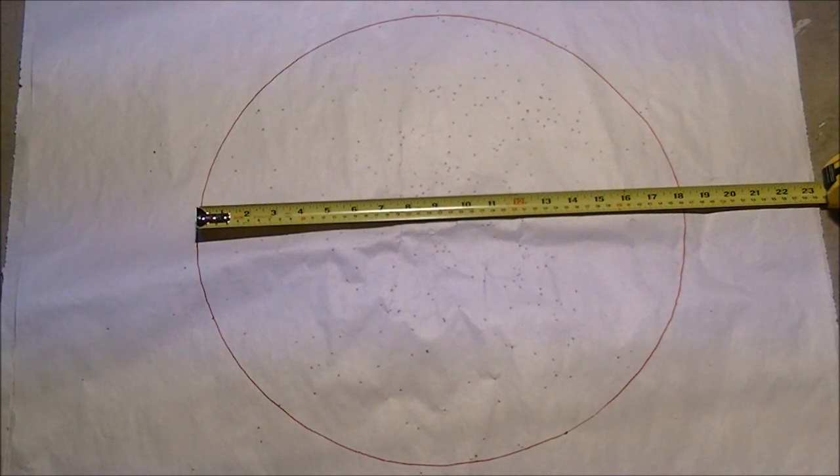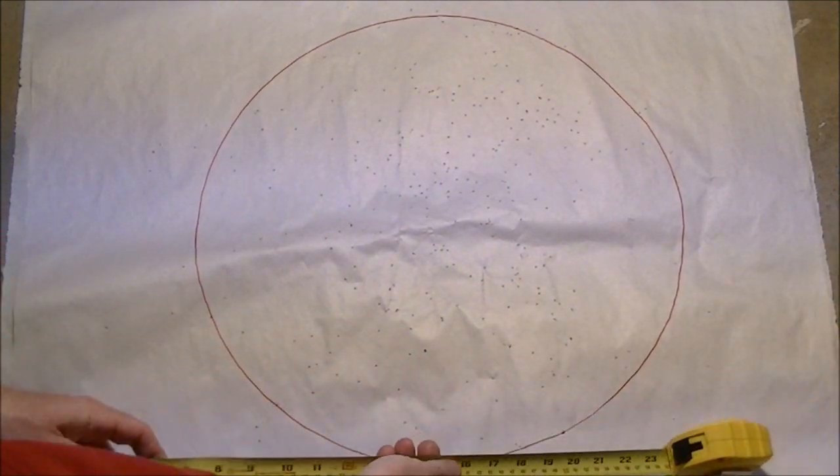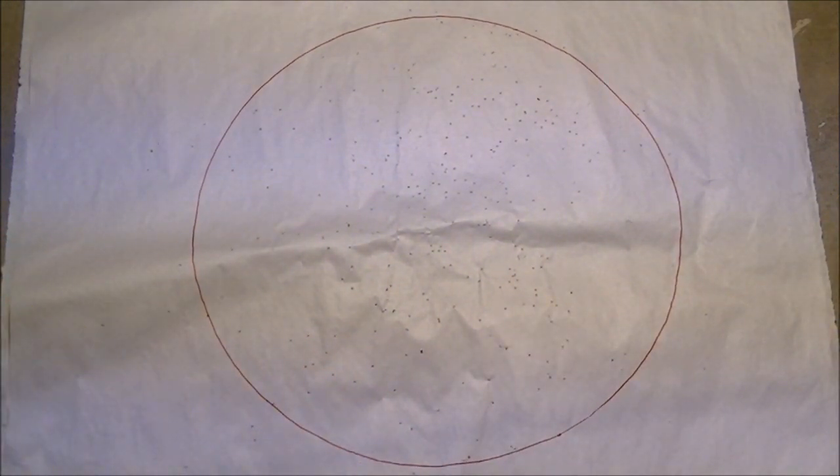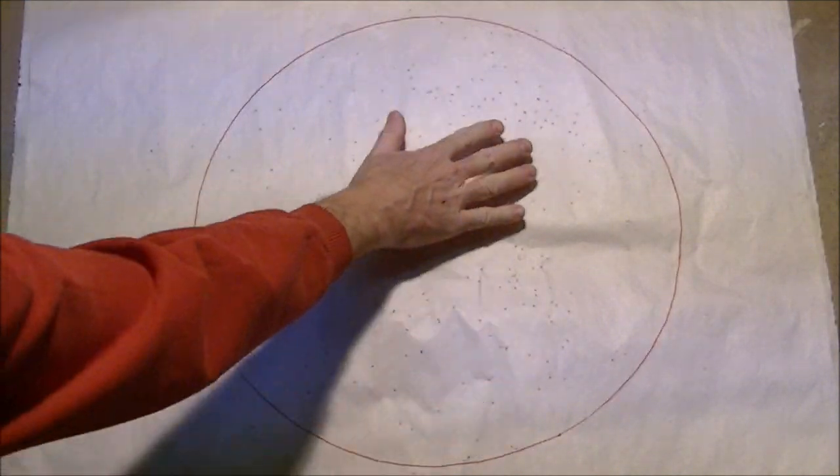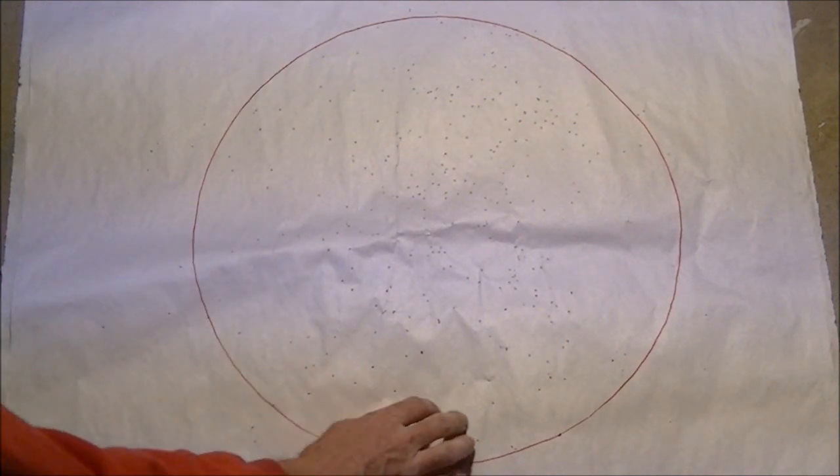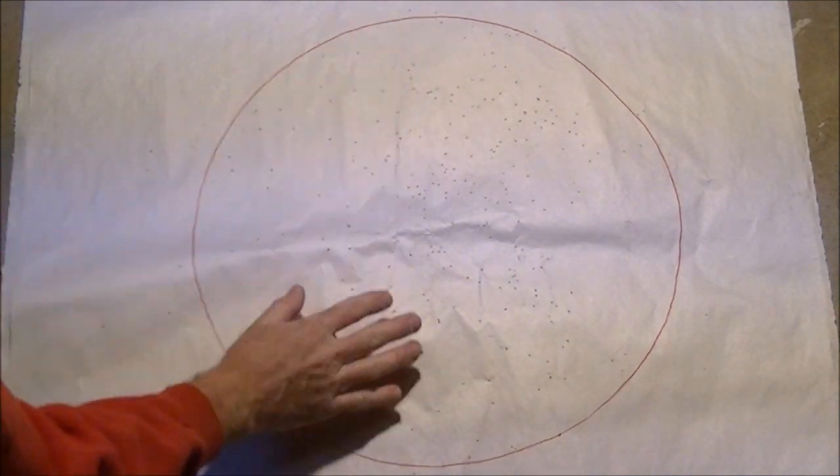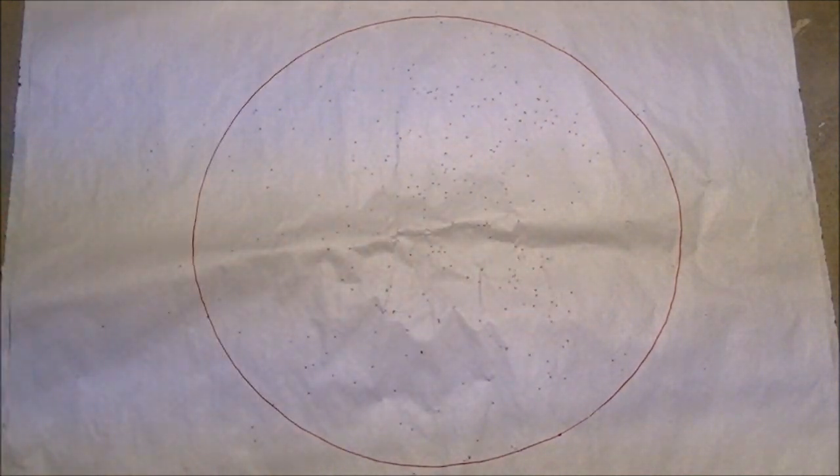You can see the dispersion of the pellets here. We've got a fairly dense section through here, bit of a hole here, bit of a hole here. It's a little thinner around the top and the bottom, but a very dense sort of center section here. There are 34 pellets outside of that 18 inch circle.